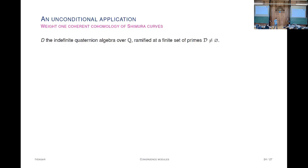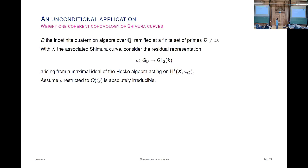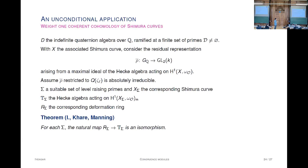The other application is an unconditional one. You start with an indefinite quaternion algebra over the rationals ramified at a finite set of primes indexed by D, and look at the associated Shimura curve and the residual Galois representation. Using the same patching technique and applying the numerical criteria, one can prove that the map R to T is an isomorphism. Once you know there is a criterion you can use at the patch level, all this is standard.